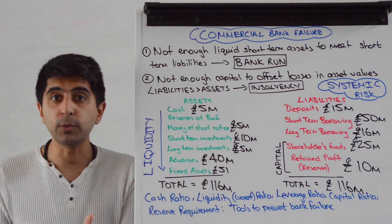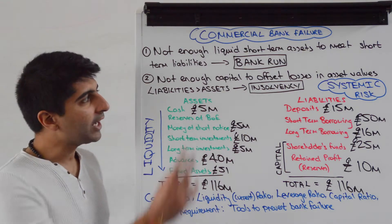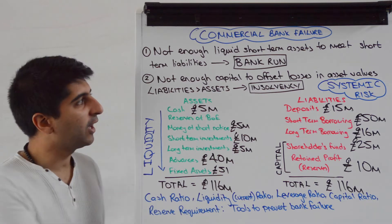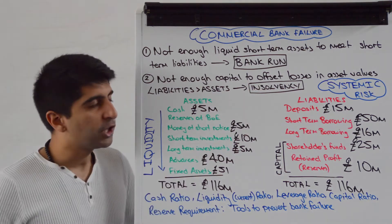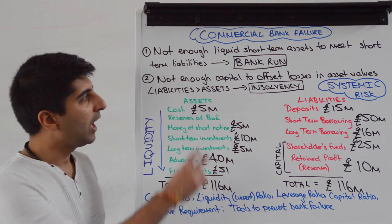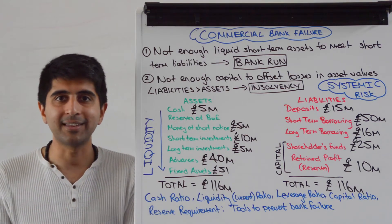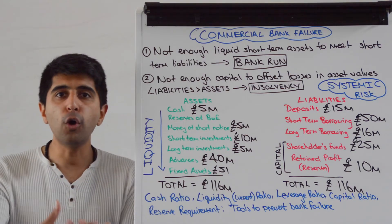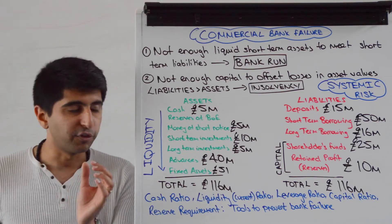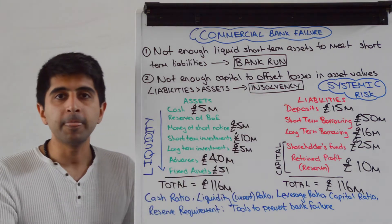They don't have enough liquid short-term assets to meet their short-term liabilities. The second way is when the bank doesn't have enough capital to offset any losses in asset values, i.e. we get to a situation where liabilities will be greater than assets. The bank will owe more than what it owns, which means the bank will therefore fail because the balance sheet won't balance. That is called insolvency.